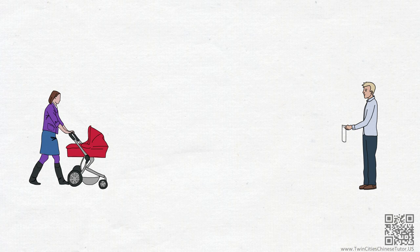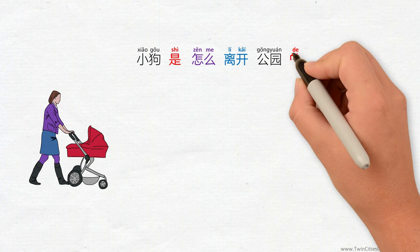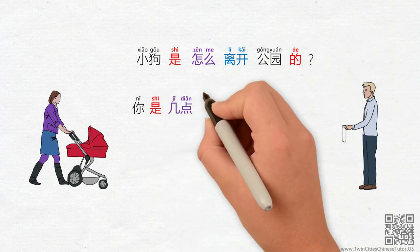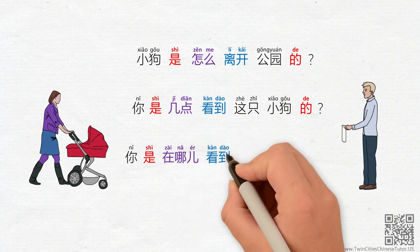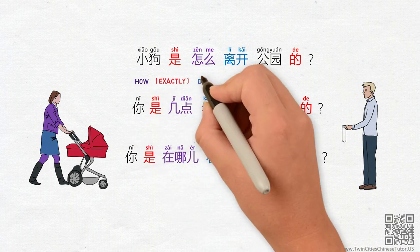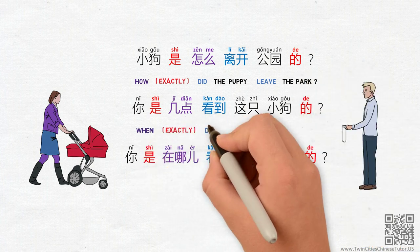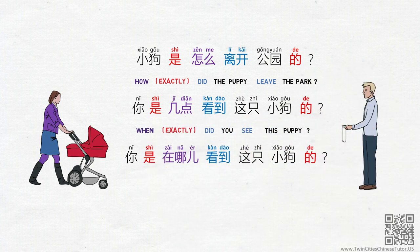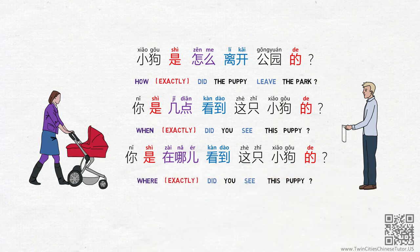So Loic can use the pattern to ask people: 小狗是怎么离开公园的? 你是几点看到这只小狗的? 你是在哪儿看到这只小狗的? Can you figure out what he's saying? The answers are: 'How exactly did the puppy leave the park?' 'When exactly did you see this puppy?' 'Where exactly did you see this puppy?'